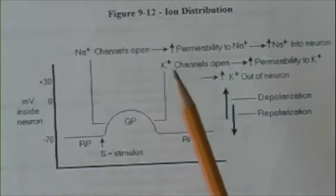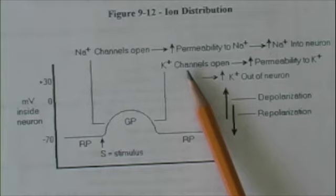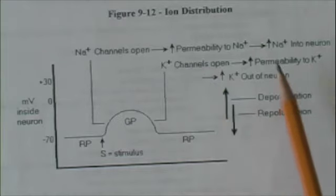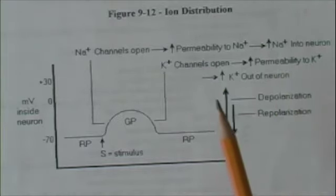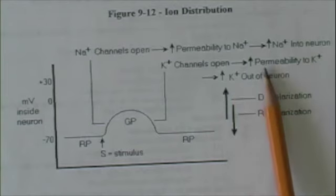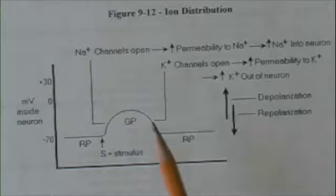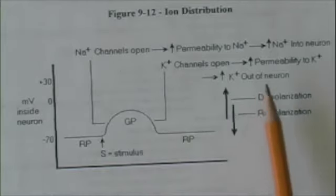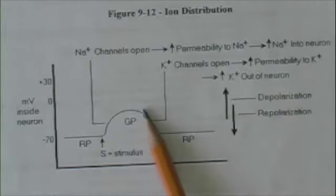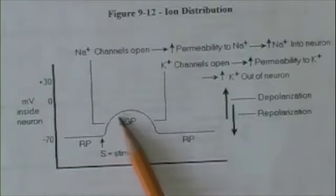This is immediately followed by an opening of potassium channels, leading to an increase in permeability to potassium. And because positive charges repel positive charges, potassium is repelled outward, causing this potential to drop back to resting. And we call this a graded potential.